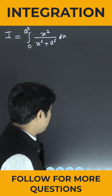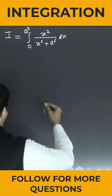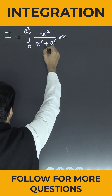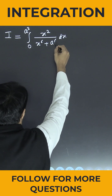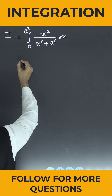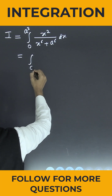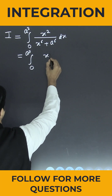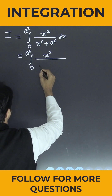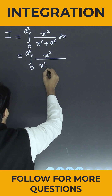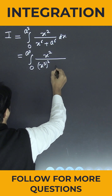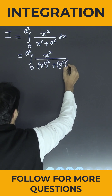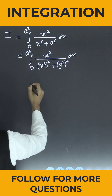One integration is given to us: the integral from 0 to a³ of x² divided by (x⁶ + a⁶) dx. Now, can I rewrite this? The limits are from 0 to a³, and the integrand is x² divided by (x³)² + (a³)² into dx.